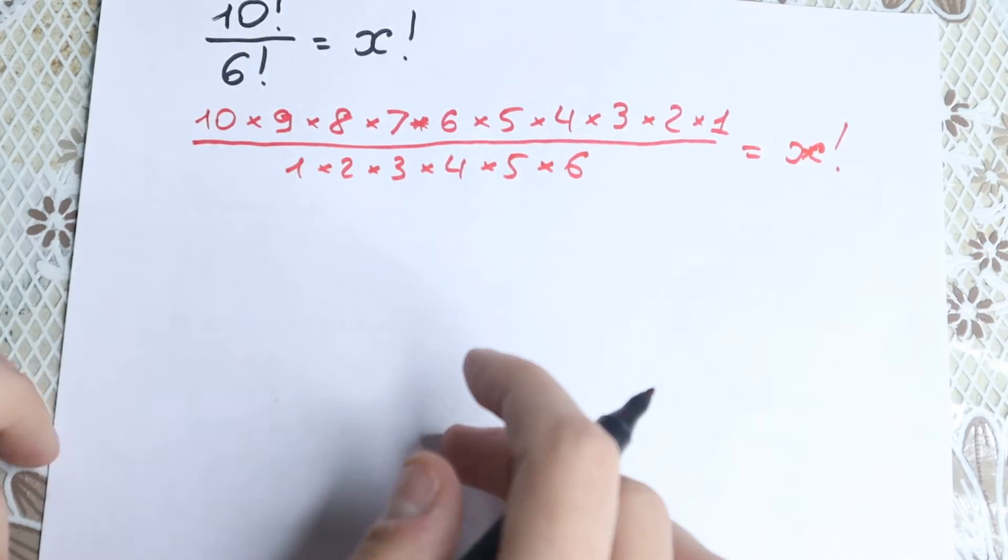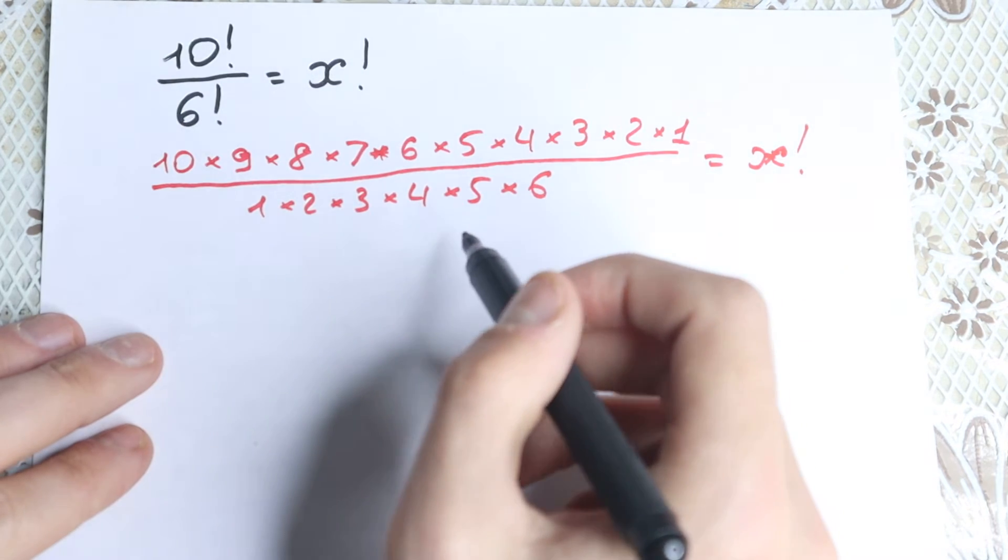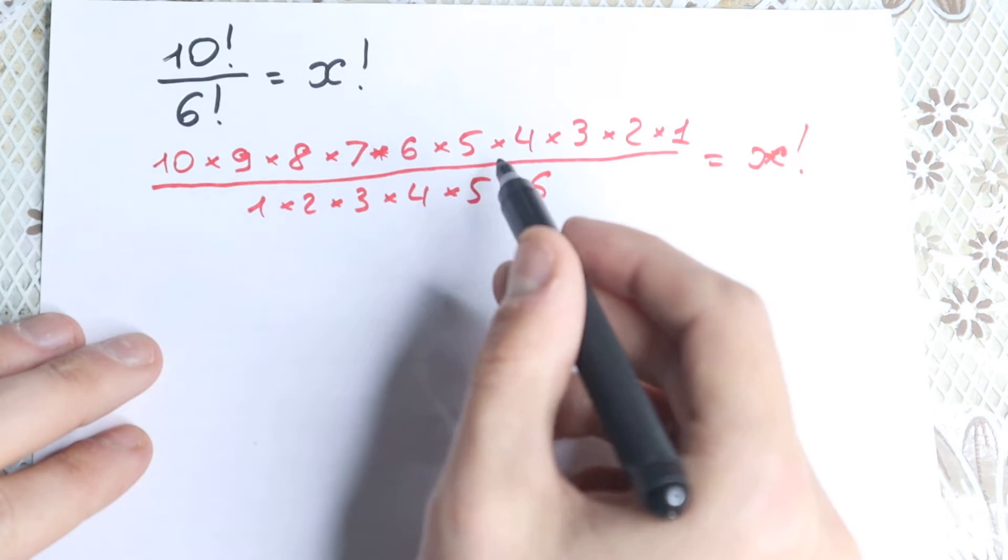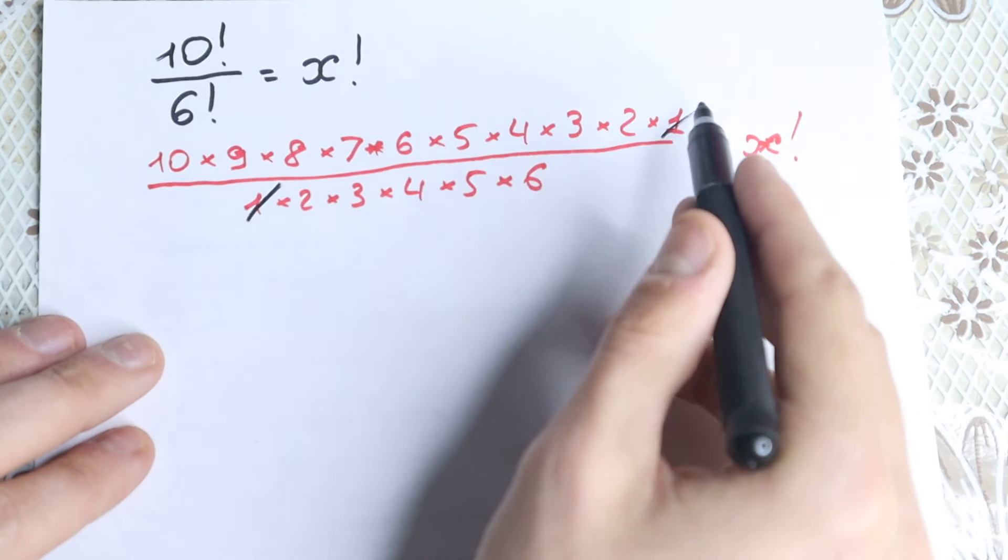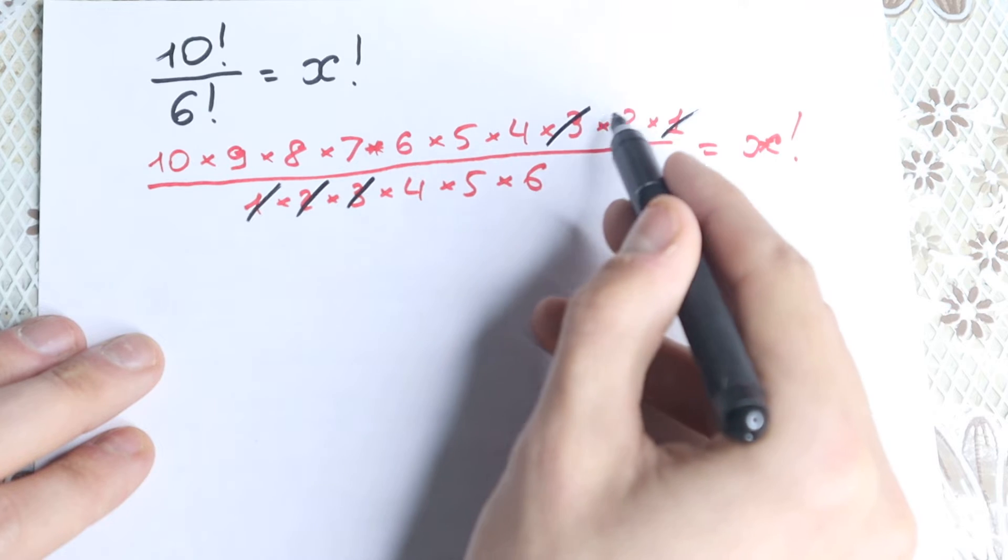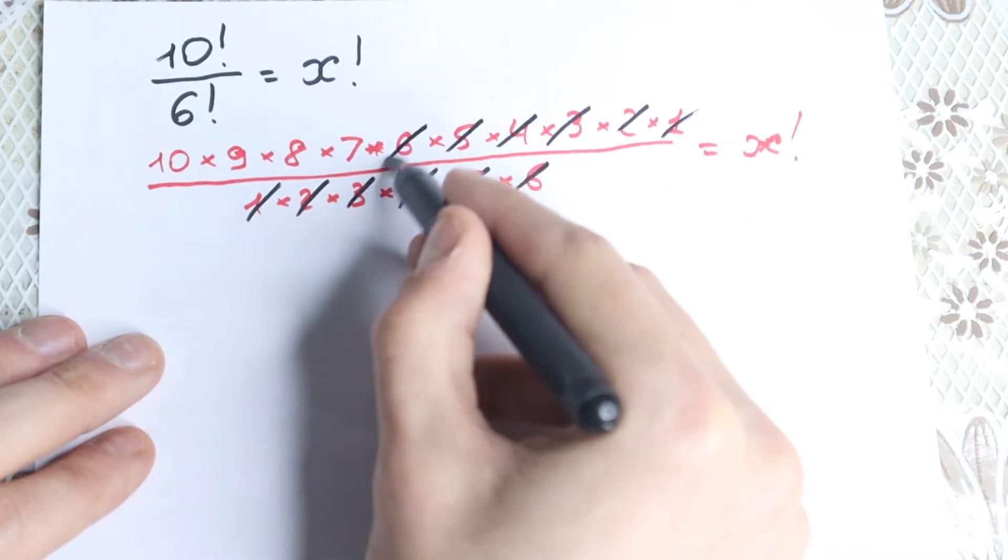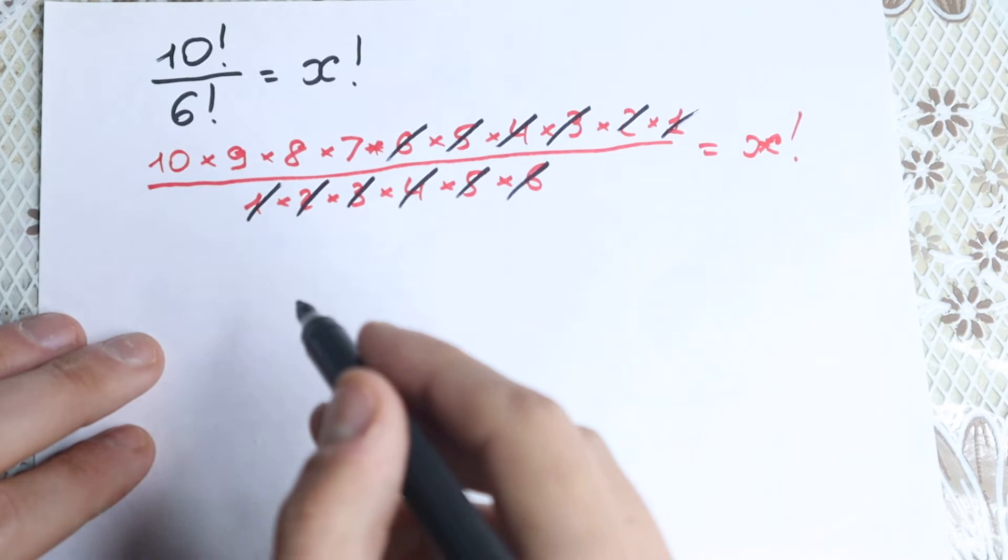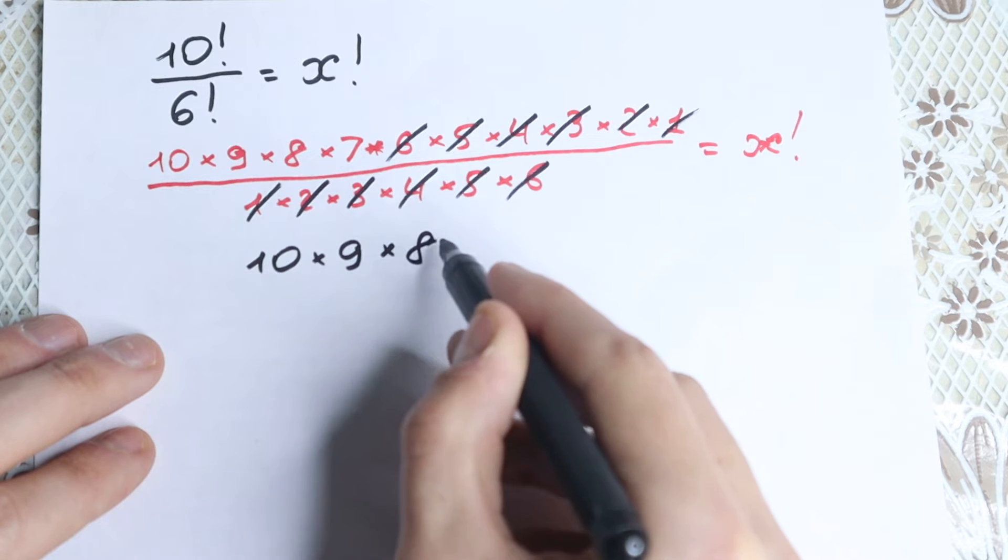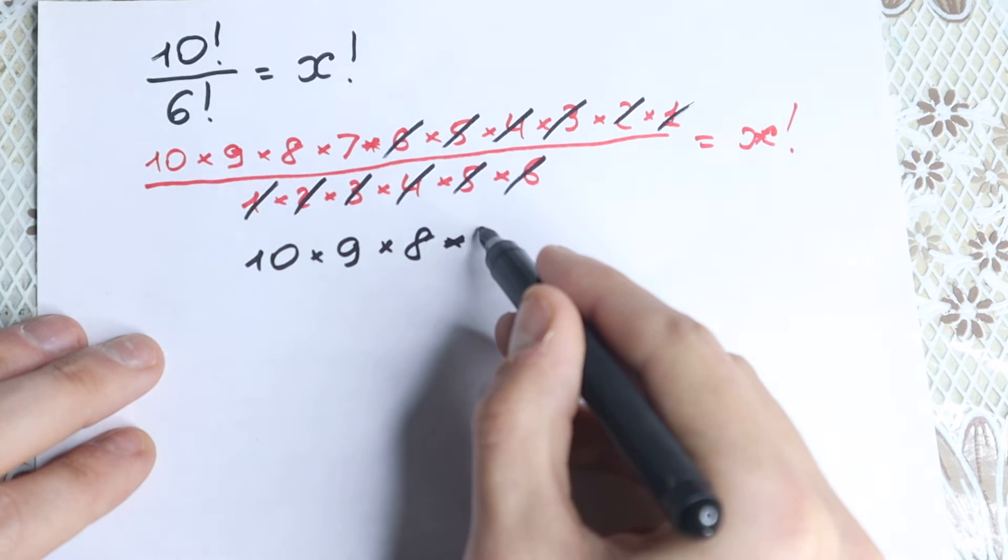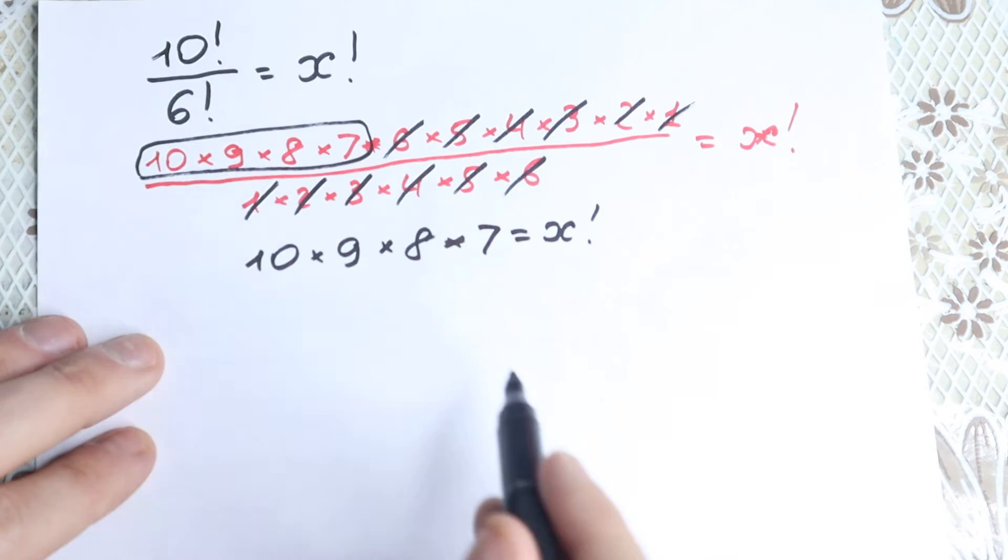And right now, if we look closely, this is a product, so we can easily cancel these numbers from our numerator and from the denominator, because we don't have addition and subtraction, only multiplication, division, so we can easily cancel. Okay, 1 and 1 we can cancel. We have 2, we have 3, we have 2, we have 3 right here. What about 4, 5, 6? Yeah, we have this 4, 5, 6 right here. So as you can see right now, we have this expression. So 10 times 9 times 8 times 7 equal to x factorial. So we have only this expression right here from our numerator.